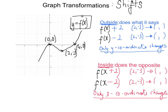Let's start with the outside type. If we're adding or subtracting something, it moves the graph up or down, and it does what it says. So if it says add two, we're adding two to each y coordinate: (0,0) moves to (0,2), (2,−3) moves to (2,−1), and (4,0) moves to (4,2). Only the y coordinate changes, and the curve shifts up by two units.